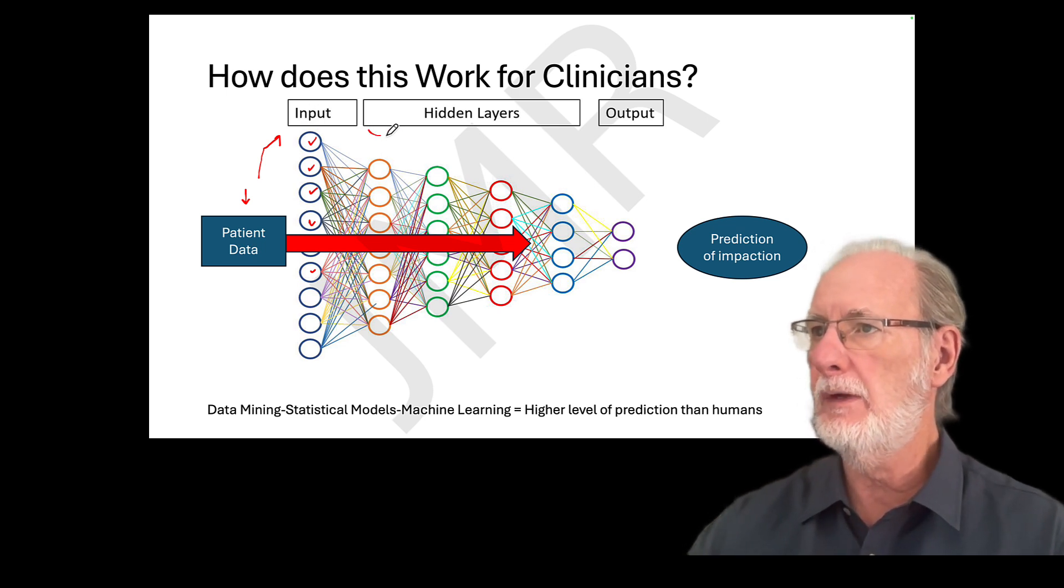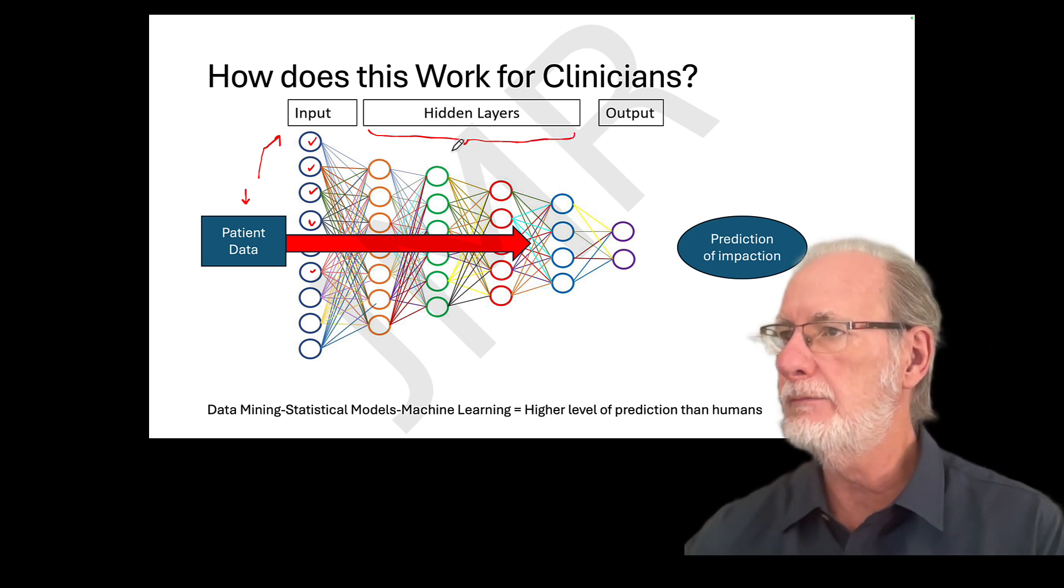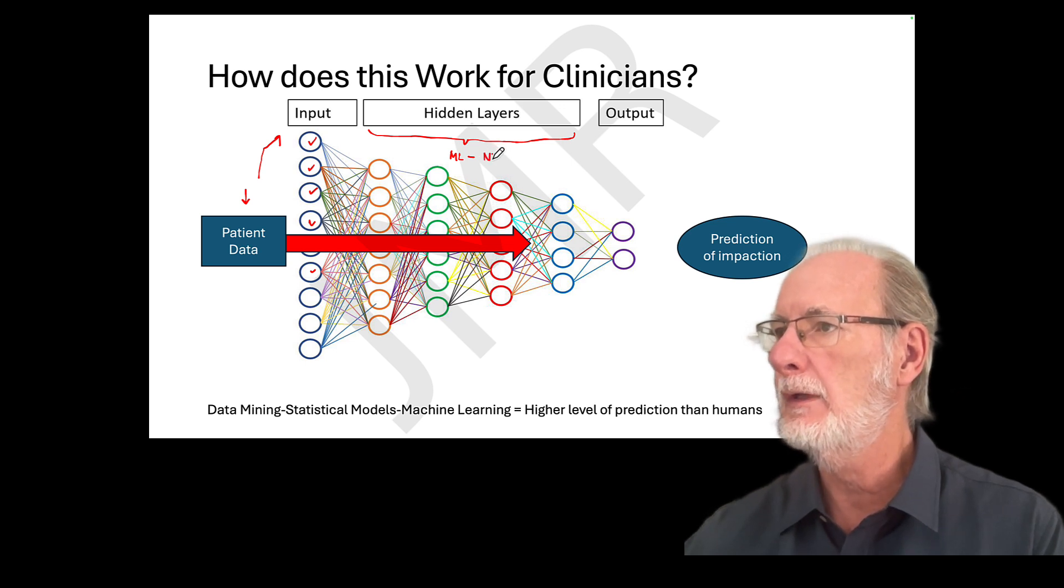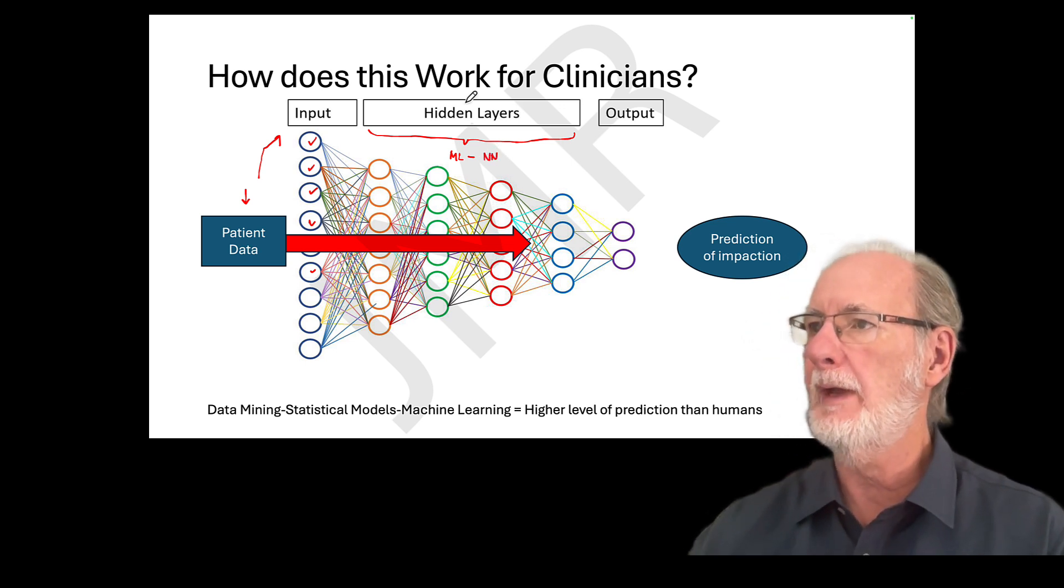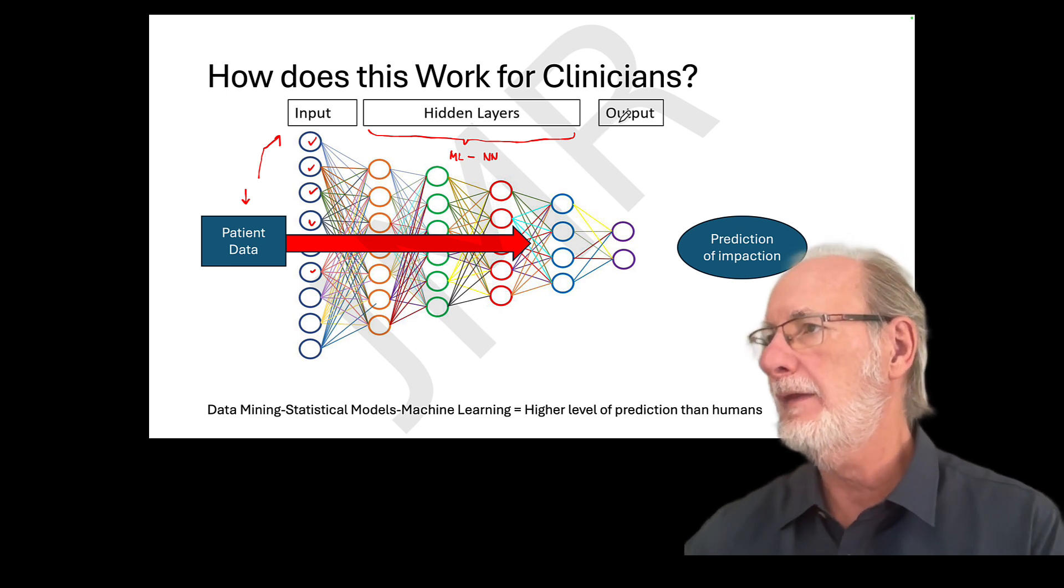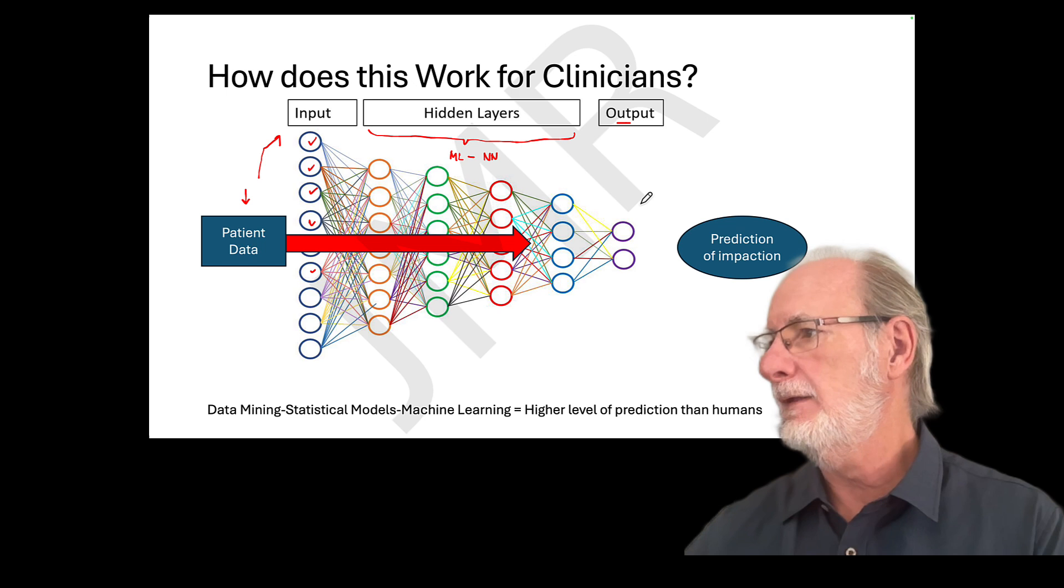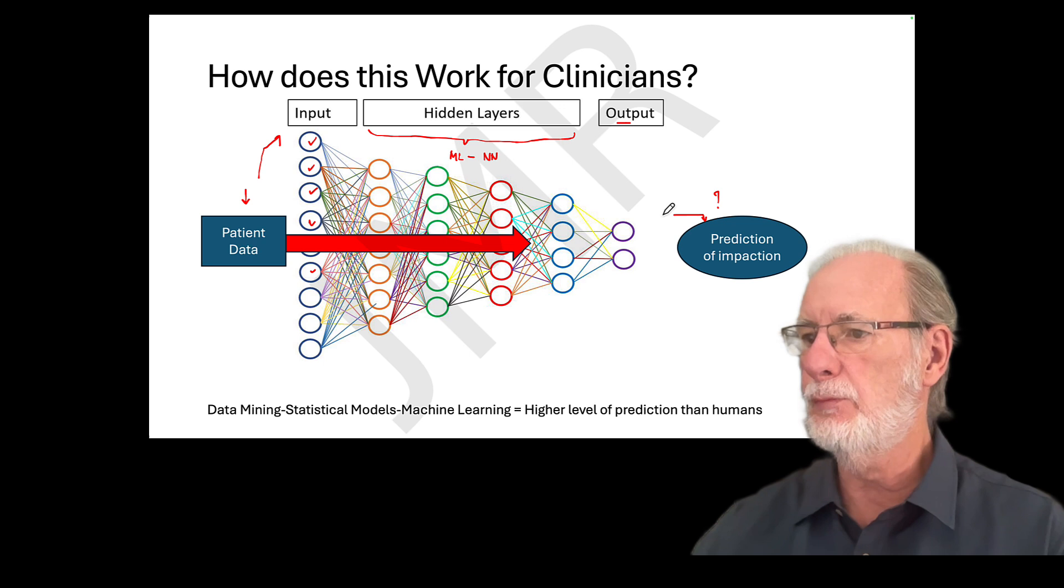This is basically where the machine learning will be right here. So it's machine learning or you may have heard neural network will be working in the background. So this is a black box. You don't really see what's going on. And then the output will be given for your question. In this case, is the tooth going to be impacted or not. So this is basically a prediction model.